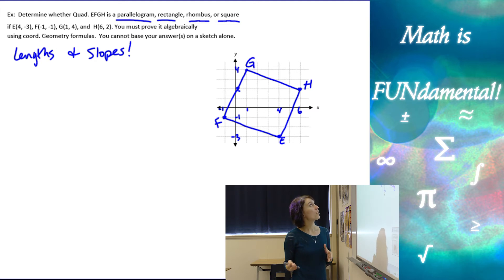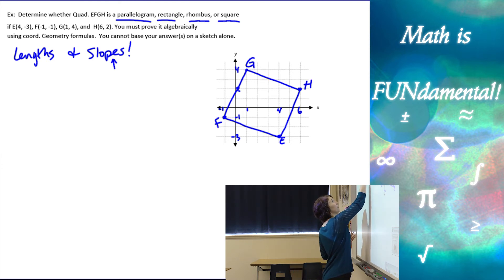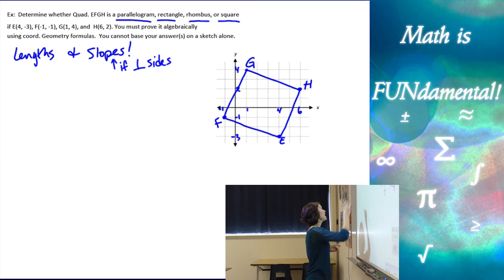Now with the slopes, granted, parallelograms, rectangles, rhombuses, squares, they all have parallel sides. But only rectangles and squares have perpendicular sides. So for the slopes, I can figure out if they're perpendicular sides to figure out if I have 90 degree angles. And with the lengths, I can figure out if I have congruent sides. So these are kind of the two things we need to be thinking about when going through this. And again, we're going to label and organize all of our work.